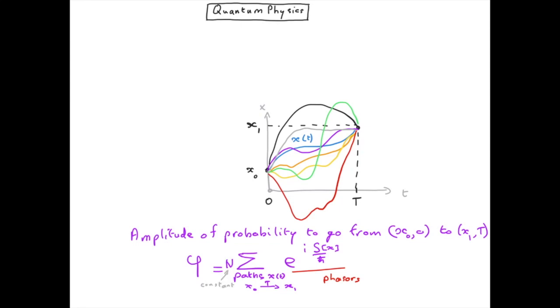A phasor being a complex number, it is convenient to represent it in the complex plane with a real and an imaginary part defining the axes. Of course, the norm of a phasor is just one, so it's going to be located on the unit circle in this complex plane.